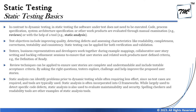When it comes to static testing, in contrast to dynamic testing, the software under test does not need to be executed. It's more about statically reviewing work products rather than executing the product or test cases. The code, process specifications, system architecture specifications, or any other work products are generally evaluated through manual examinations, conducted in two ways: by reading the documentation — called a review — or with the help of tools, which is called static analysis.